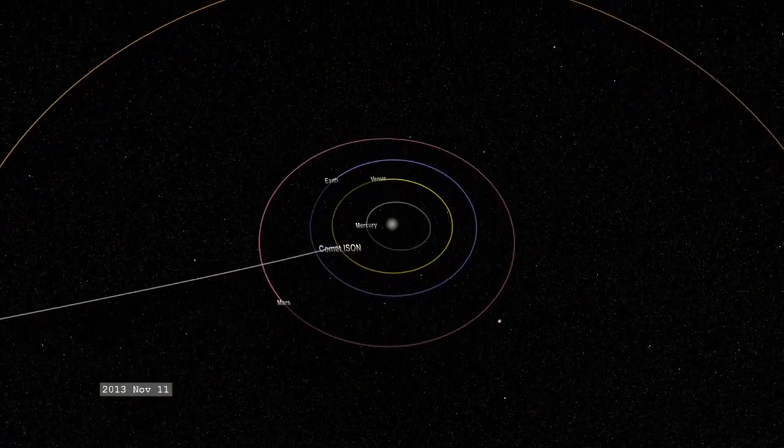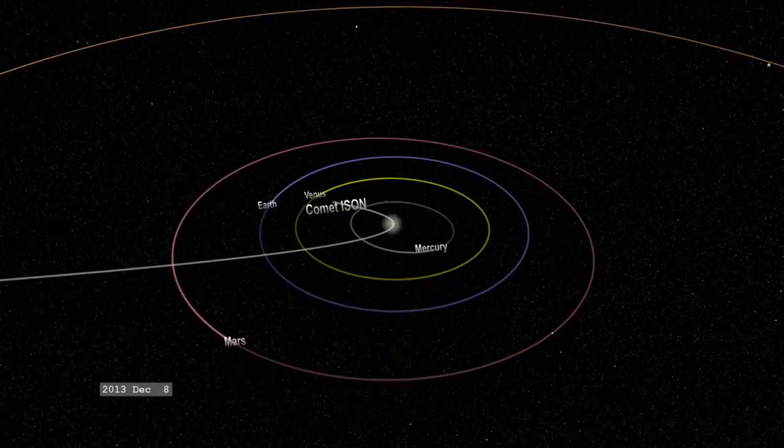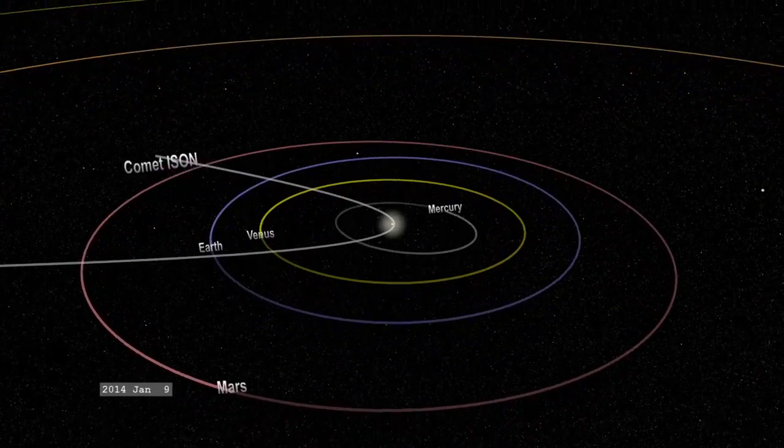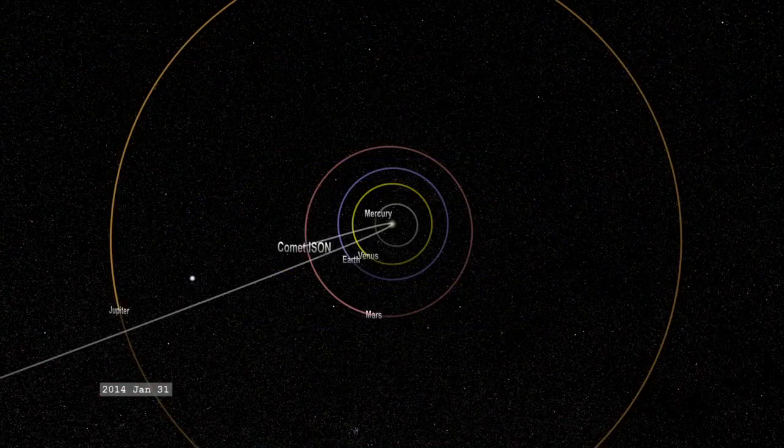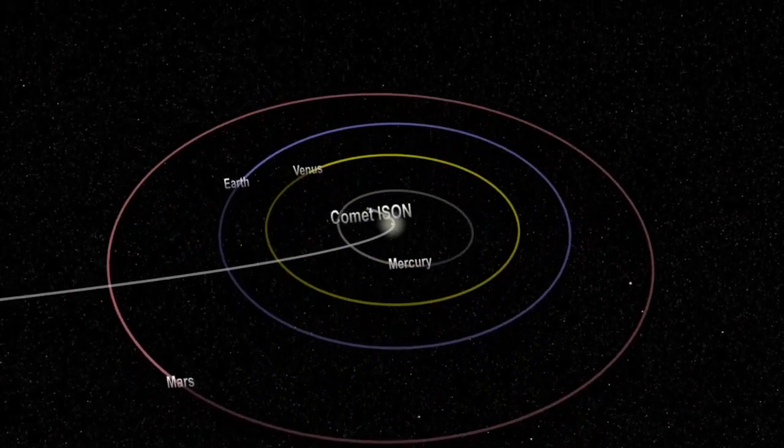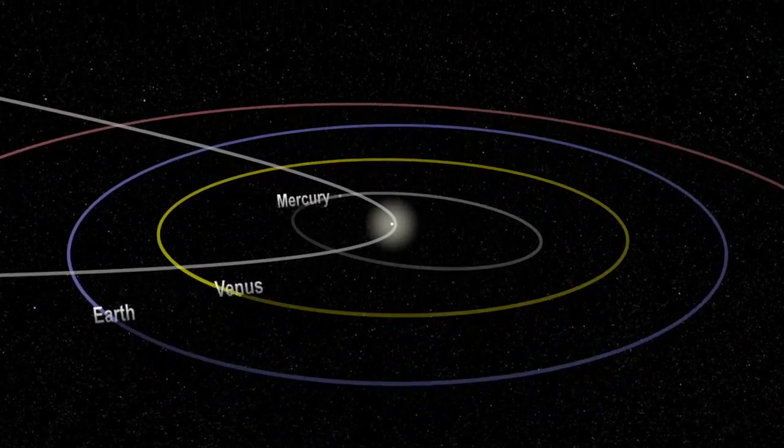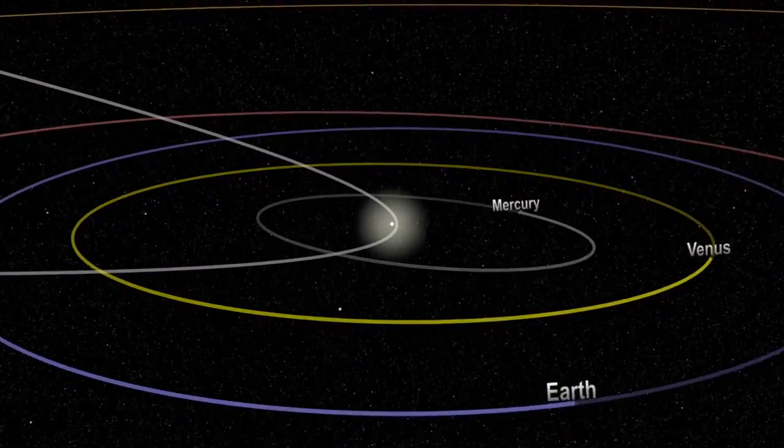Comet ISON, an upcoming sungrazer with perihelion on November 28, 2013, is not on the Kreutz path. In fact, ISON's orbit suggests that it may gain enough momentum to escape the solar system entirely and never return. Before it does so, it will pass within about 40 million miles from Earth on December 26, assuming it survives its trip around the Sun.